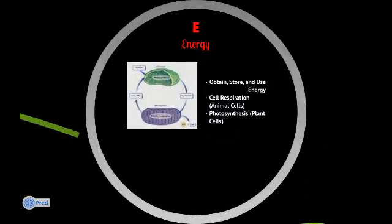E stands for energy. Everything that is living requires energy. We have to obtain it, store it, and eventually use it to carry out our everyday lives. Us animals require mitochondria — mitochondria are like little power plants inside our cells, and they take part in cellular respiration. Plants, on the other hand, have little factories called chloroplasts, and chloroplasts take part in photosynthesis. Photosynthesis harnesses the energy from the sun and turns it into usable food for the plant.